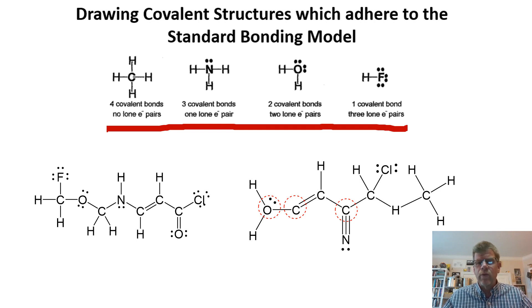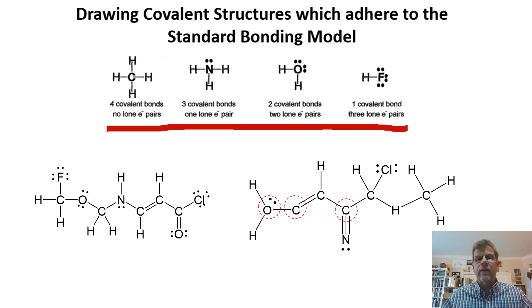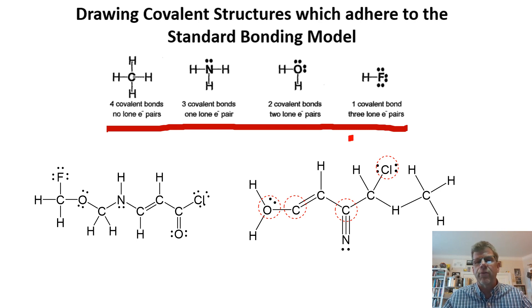Some of these look really weird — like this nitrogen atom. But if we think about it, this nitrogen has three covalent bonds emanating from it, all tied up in one triple bond, so it's three. And it has one lone pair of electrons on it, so it does indeed adhere to the standard bonding model. Moving along, that chlorine has one covalent bond emanating from it but only two lone electron pairs — it should be three. So that's problematic.